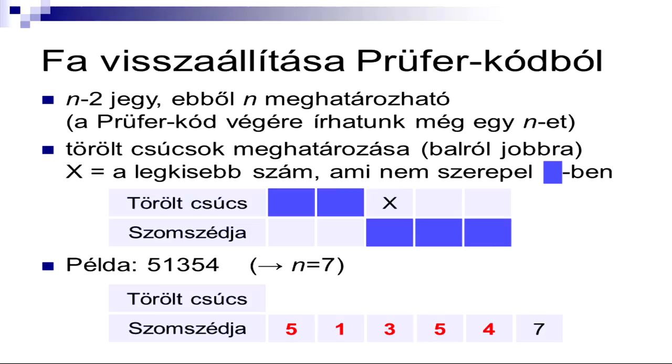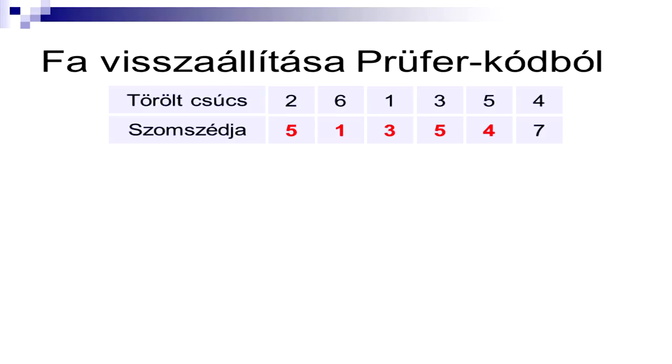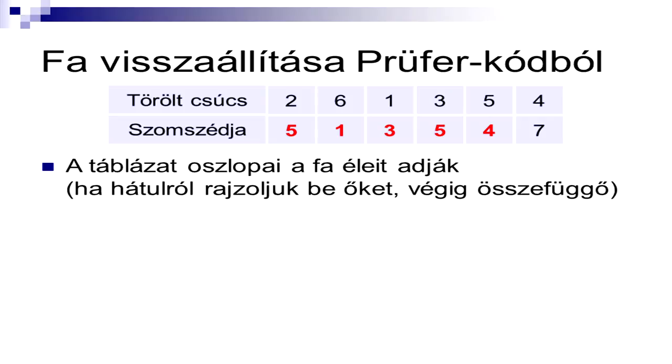Amikor éppen itt járok, akkor ide a legkisebb olyan értéket kell írni, ami egyrészt nem szerepel itt, tehát még nem töröltem korábban. Itt sem szerepelhet, hiszen saját magával nem lehet összekötve, és itt sem szerepelhet, hiszen azokhoz a csúcsokhoz még csatlakozni fognak később másikak. Egyébként ez a táblázat pont a gráf éleit írja le. Ezzel a módszerrel nézzük akkor, hogy mi lesz ebből az 5-1-3-5-4 Prüfer kódból. Mögé írhatom a 7-est, 7 csúcsú fának a 6 élét keresem. Először ide keresem a legkisebb olyan számot, ami nem szerepel utána. A 2-es lesz. Utána olyat keresek ide, ami nem szerepel ebben a részben, illetve előtte. Ő lesz a 6-os, és így tovább ez egyesével kitölthető.